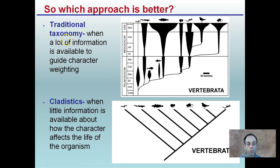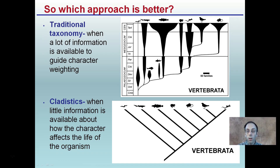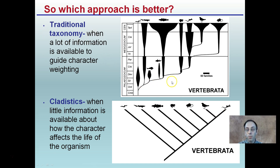Which approach is better? Traditional taxonomy is used when there's a lot of information available to guide character weighting; cladistics is used otherwise. In class, you're just going to get pictures, so we can't really perform traditional taxonomy — we don't have enough information about the duration of species diversities. Therefore, we're going to use cladistics, mainly based on phenotypic features.